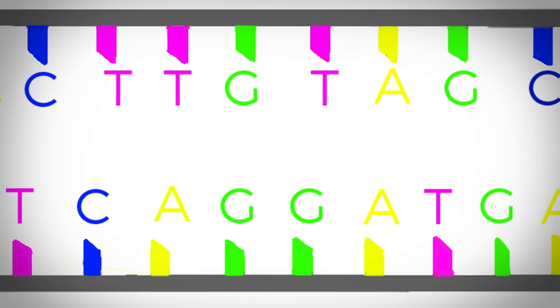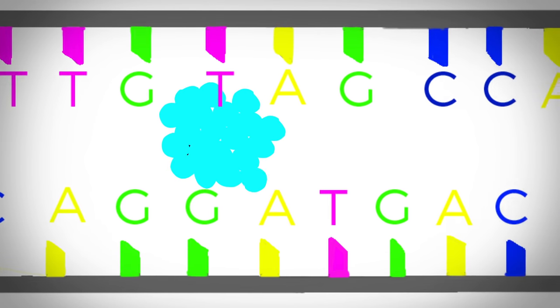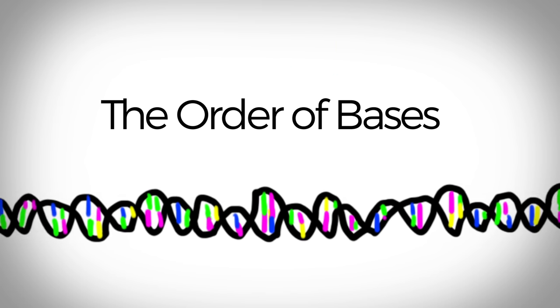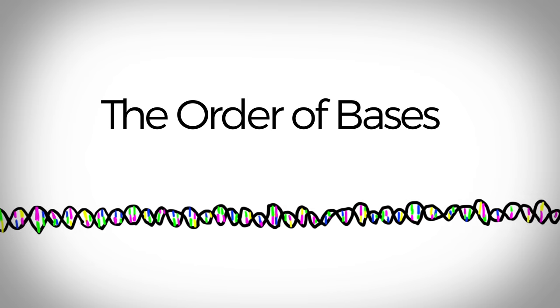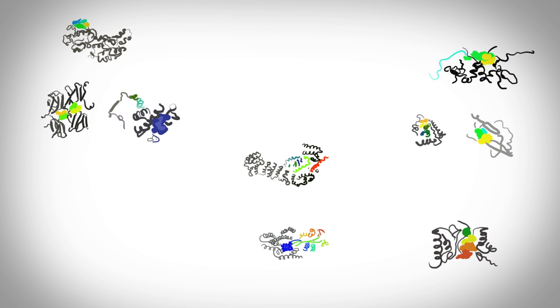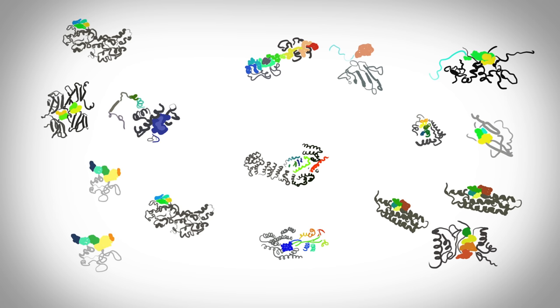Your body reads the genes and the letters like a recipe, and builds protein. The order of the bases in the DNA, along with the length and sequence of the gene, determines the size and shape of the protein it builds. The size and shape of the protein determine the function it will have in your body.